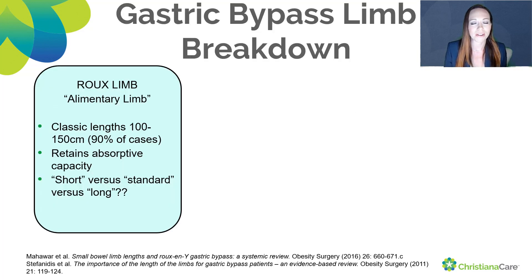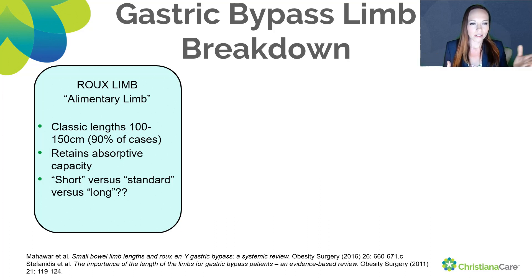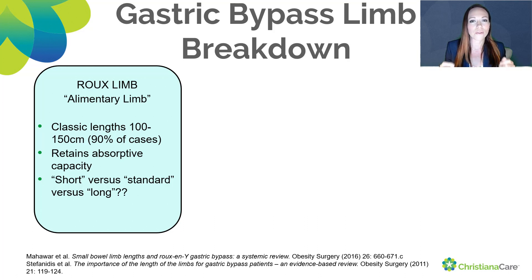Let's break down each of the limbs that make up the gastric bypass. First is the Roux limb, otherwise known as the alimentary limb, abbreviated AL. This classically has a length of 100 to 150 centimeters, and over 90% of bariatric surgeons use this classic length. This limb does retain some absorptive capacity. There are different defining lengths for the Roux limb — short, standard, and long — but what we consider those ranges to be differs across every study and textbook, so there's really no uniformity to that terminology.